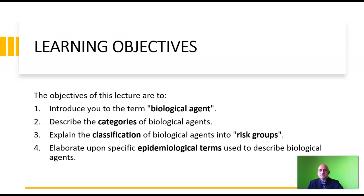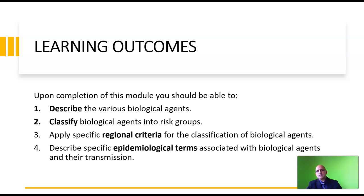The learning objectives of this particular lecture are to introduce you to the term biological agent, describe the categories of biological agents, explain the classification of biological agents into risk groups, and elaborate upon specific epidemiological terms used to describe biological agents. Upon completion of this module, you should be able to describe the various biological agents, classify biological agents into risk groups, apply specific regional criteria for the classification of biological agents, and describe specific epidemiological terms associated with biological agents and their transmission.